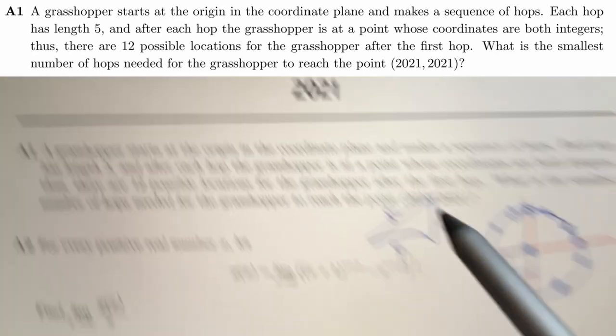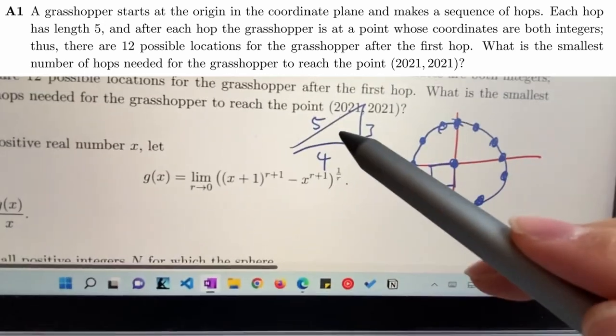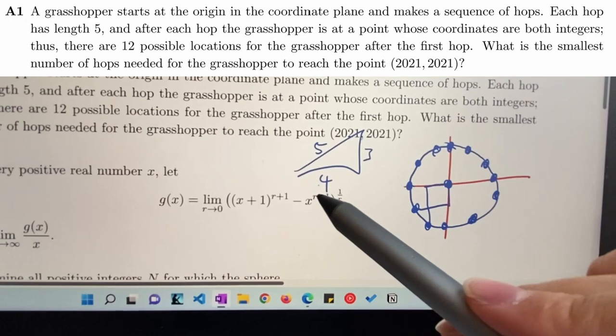I'm assuming we're using the triangle thing where it's like three, four, five. So that would be three down, four across, so like there, and then three this way, and then four down that way. Yeah, so then he's got one, two, and then one, two, and then... What's the smallest number of hops needed for the grasshopper to reach the point? 20, 21, 20... It's a year question. We have the year. It's a year question. Oh boy.